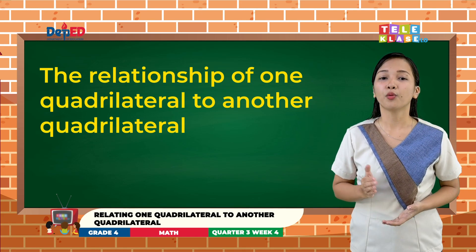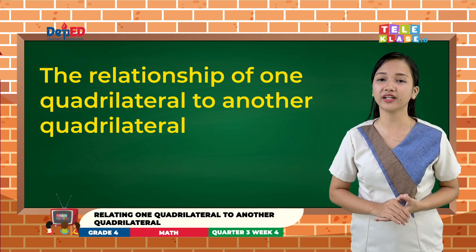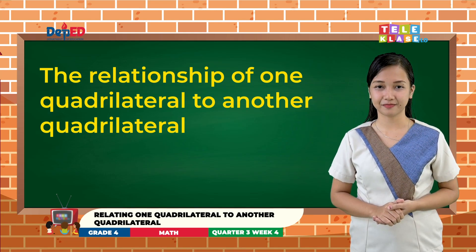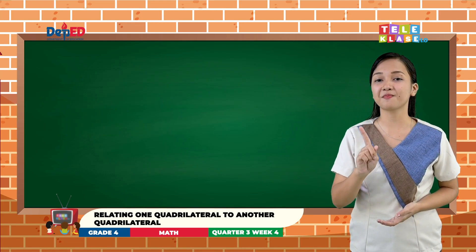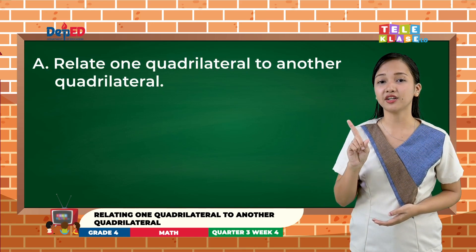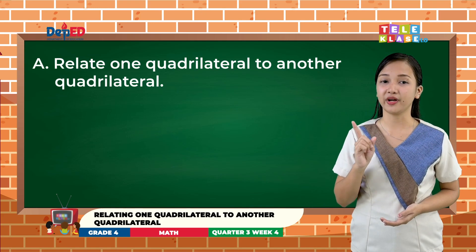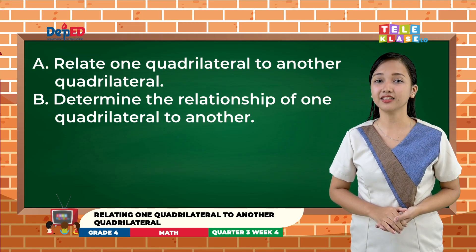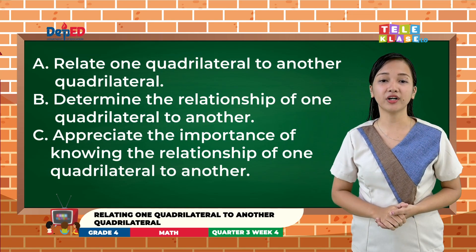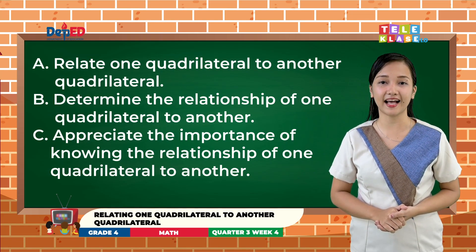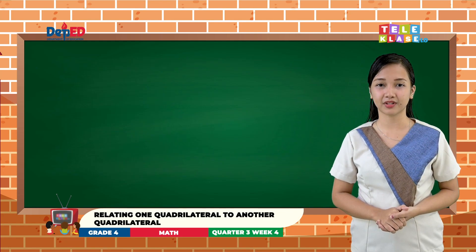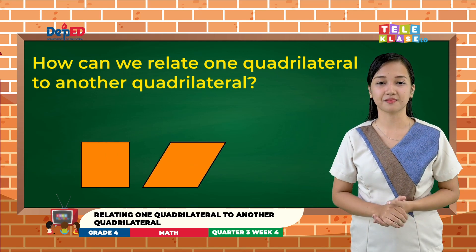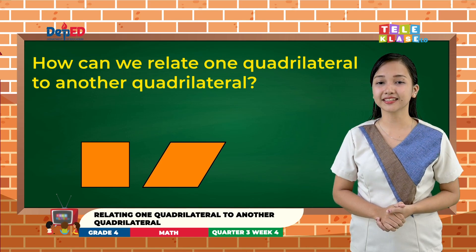For today's lesson, we will be discussing the relationship of one quadrilateral to another quadrilateral — for example, square to rhombus. You are expected to: first, relate one quadrilateral to another; second, determine the relationship of one quadrilateral to another; third, appreciate the importance of knowing these relationships. How can we relate one quadrilateral to another? Listen up, focus, and learn.